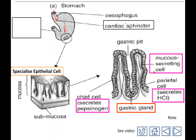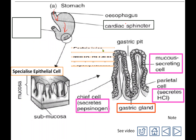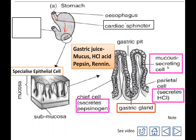So mucus-secreting cell, parietal cell, and chief cell — all these specialized epithelial cells join together to form the gastric glands. The gastric glands produce gastric juice. Gastric juice contains mucus, hydrochloric acid, pepsin enzyme, and another enzyme called rennin.